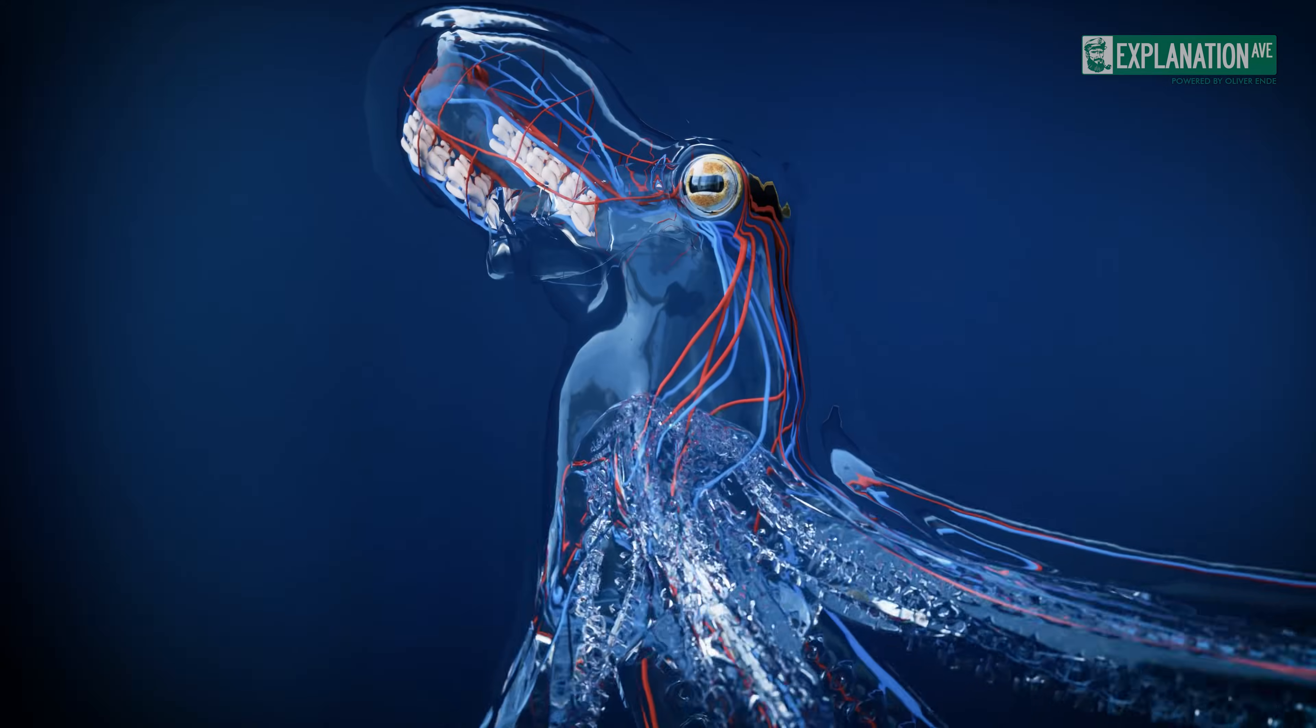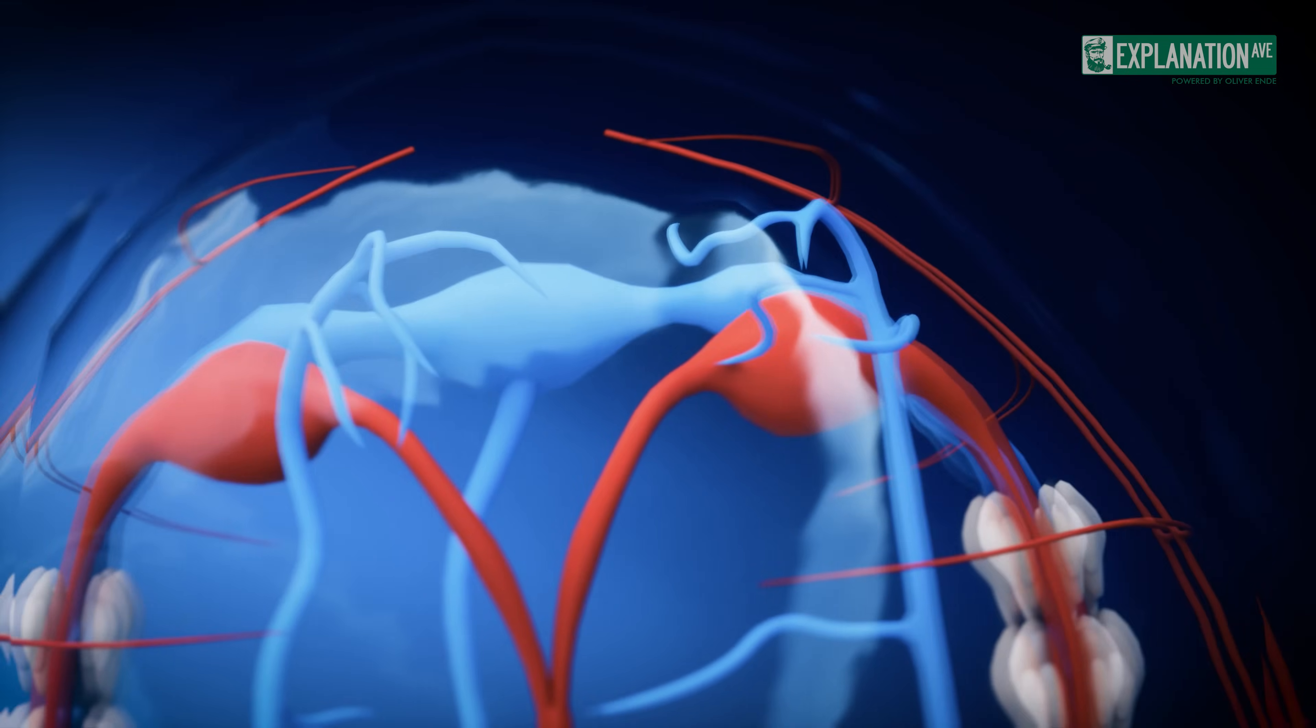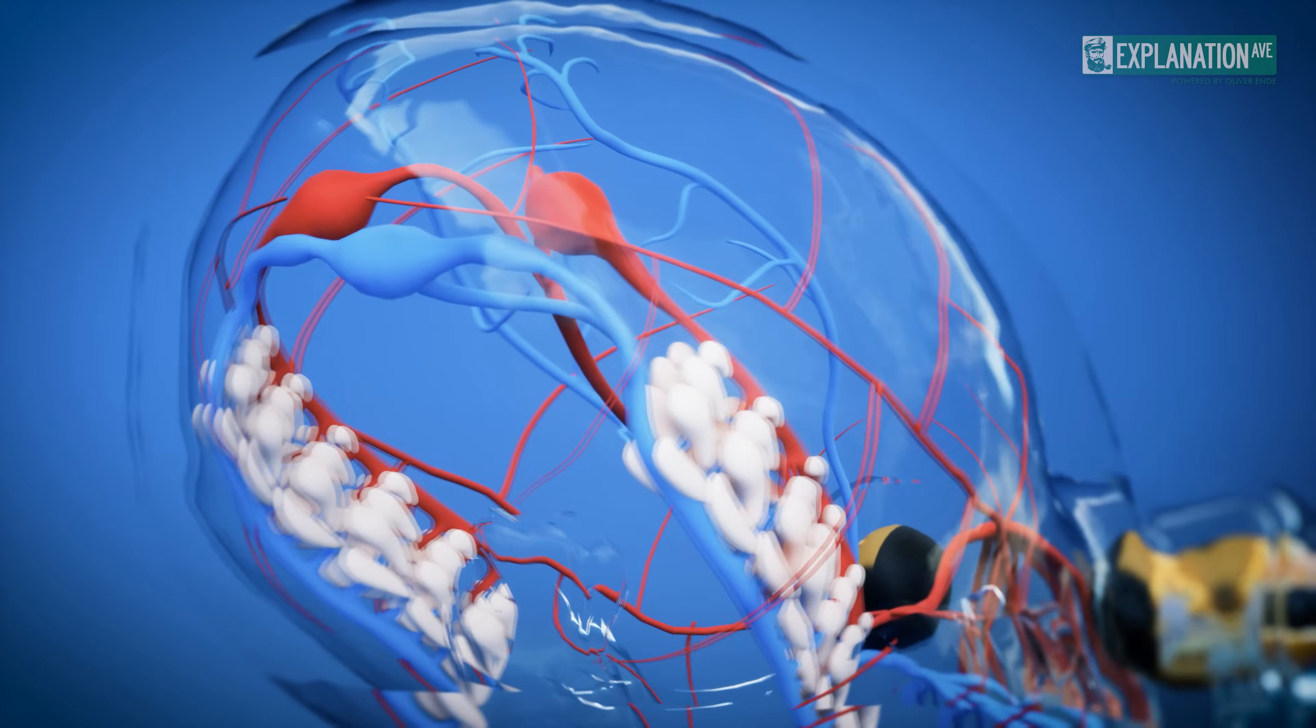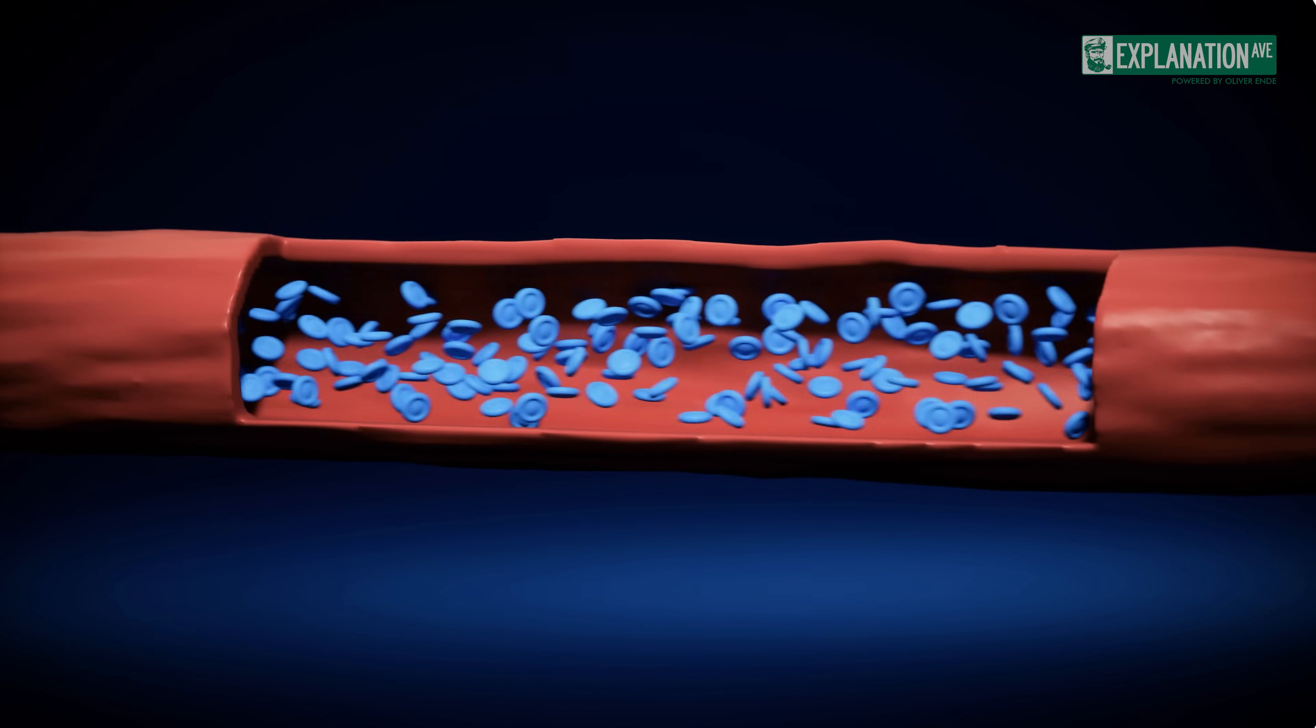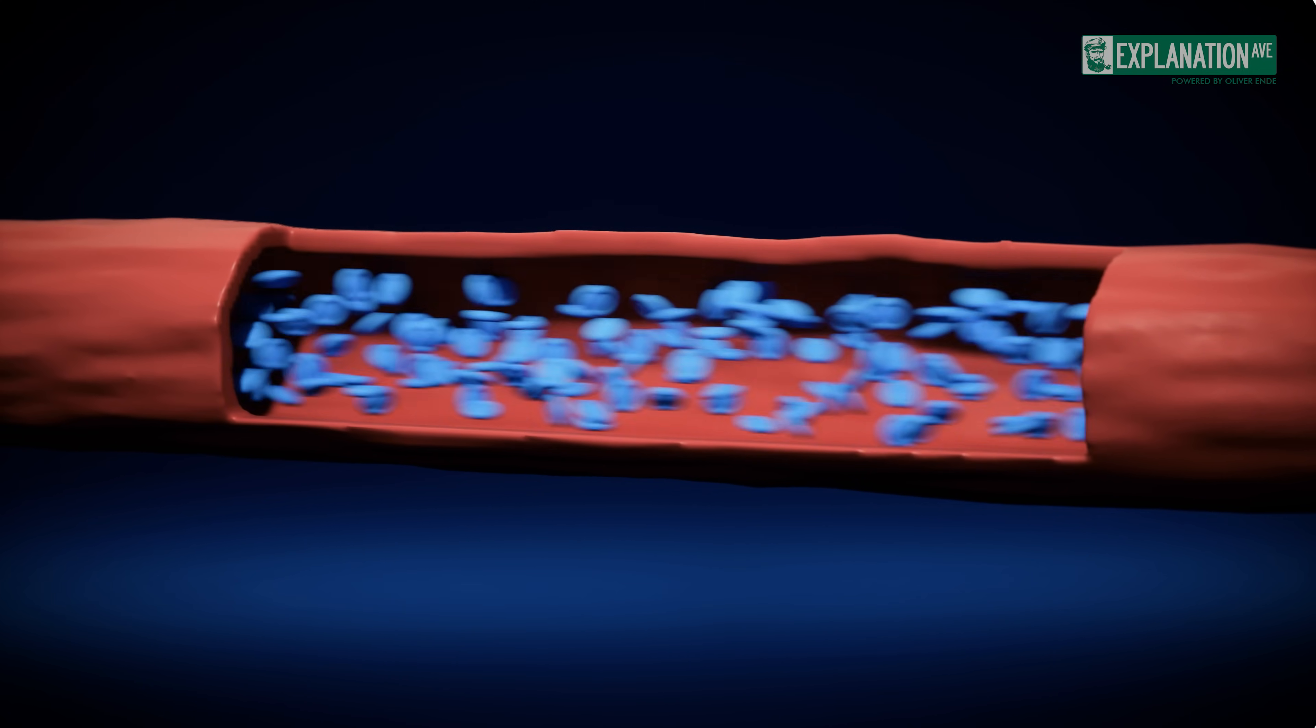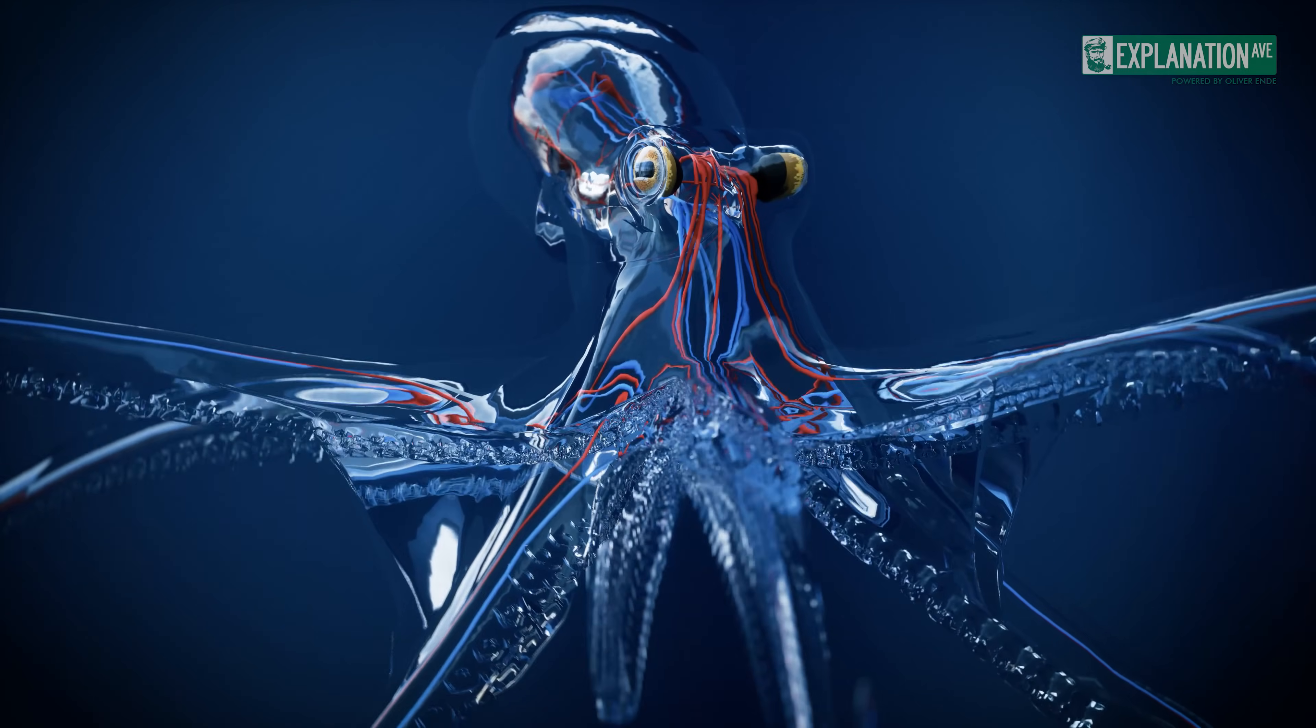The octopus has a closed circulatory system characterized by three hearts and blue blood. Two of the hearts are located near the gills and pump blood through them. The third centrally located heart distributes oxygen-rich blood throughout the body. This special system ensures an effective supply of oxygen and nutrients to all organs and muscles. The bluish blood is the result of the oxygen carrier protein hemocyanin, which is less efficient than our hemoglobin. However, the three hearts enable an effective distribution of blood despite the lower oxygen-binding efficiency.